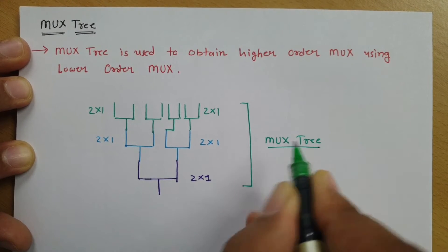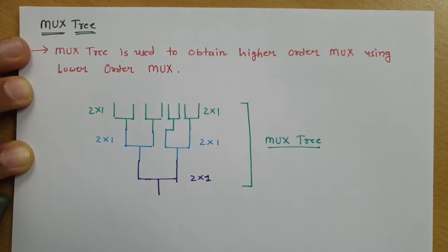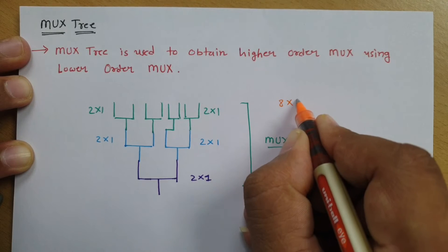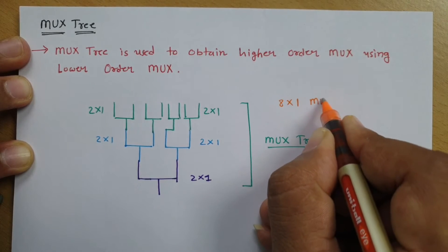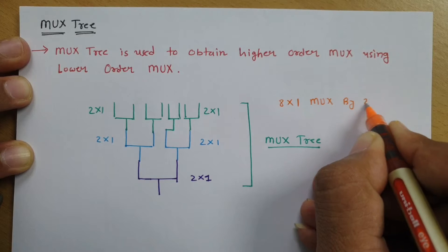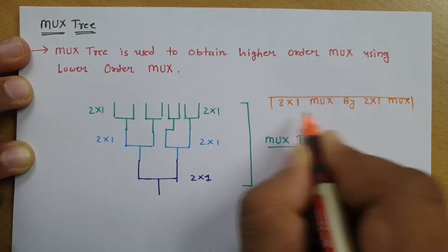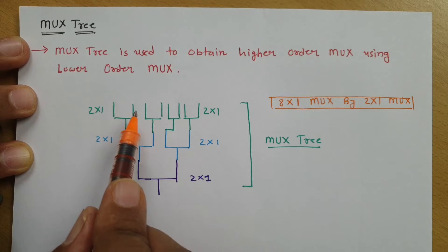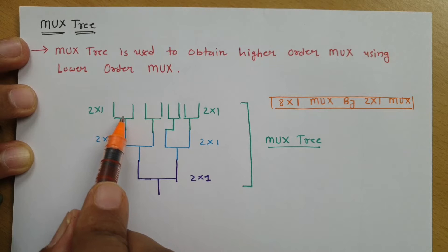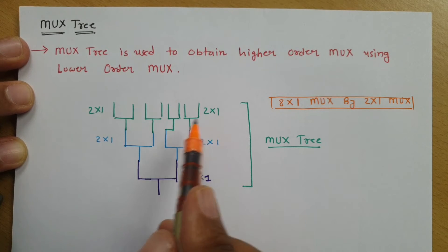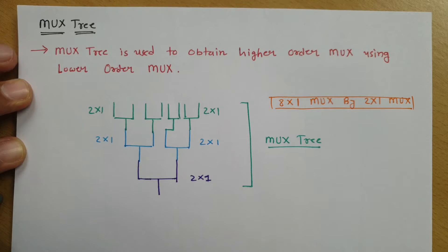In this MUX tree, we have obtained an 8×1 multiplexer by using 2×1 multiplexers. Now see how many 2×1 multiplexers are required to obtain an 8×1 multiplexer. Counting: 1, 2, 3, 4, 5, 6, 7 — so we need 7 two-by-one multiplexers to obtain an 8×1 multiplexer.